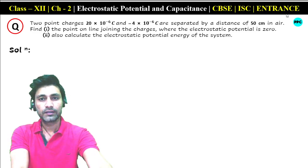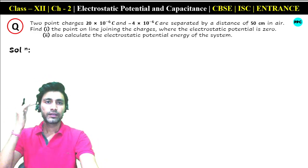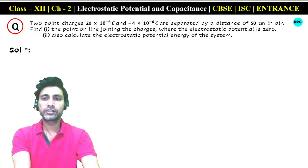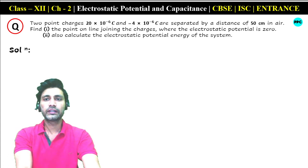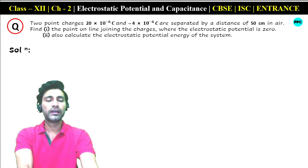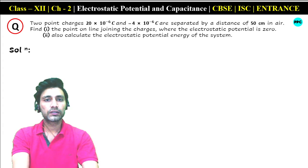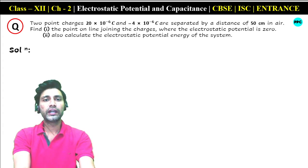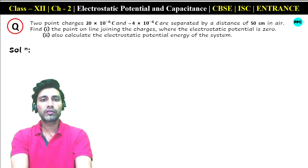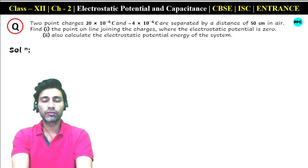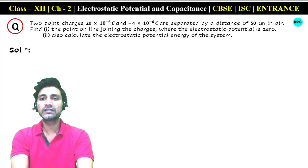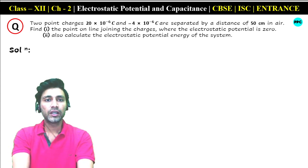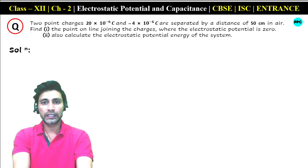Hello students. Chapter 2: Electrostatic Potential and Capacitance — important questions for CBC, ISC and all boards. Read this question: 2 point charges, 20×10⁻⁶ coulomb and minus 4×10⁻⁶ coulomb, are separated by a distance of 50 cm in air. Find the point on the line joining the charges where the electrostatic potential is zero.